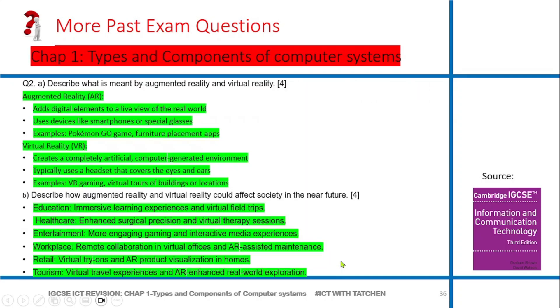For the next question from the textbook, describe what is meant by augmented reality and virtual reality. The question says four marks, so once you see four marks it means you should give up to four points to gain all the marks. You're differentiating between augmented reality and virtual reality, so it means you should give at least two points for augmented reality and two points for virtual reality. When they say describe, it doesn't mean you should go and start writing a paragraph - you give short sentences that give a description.